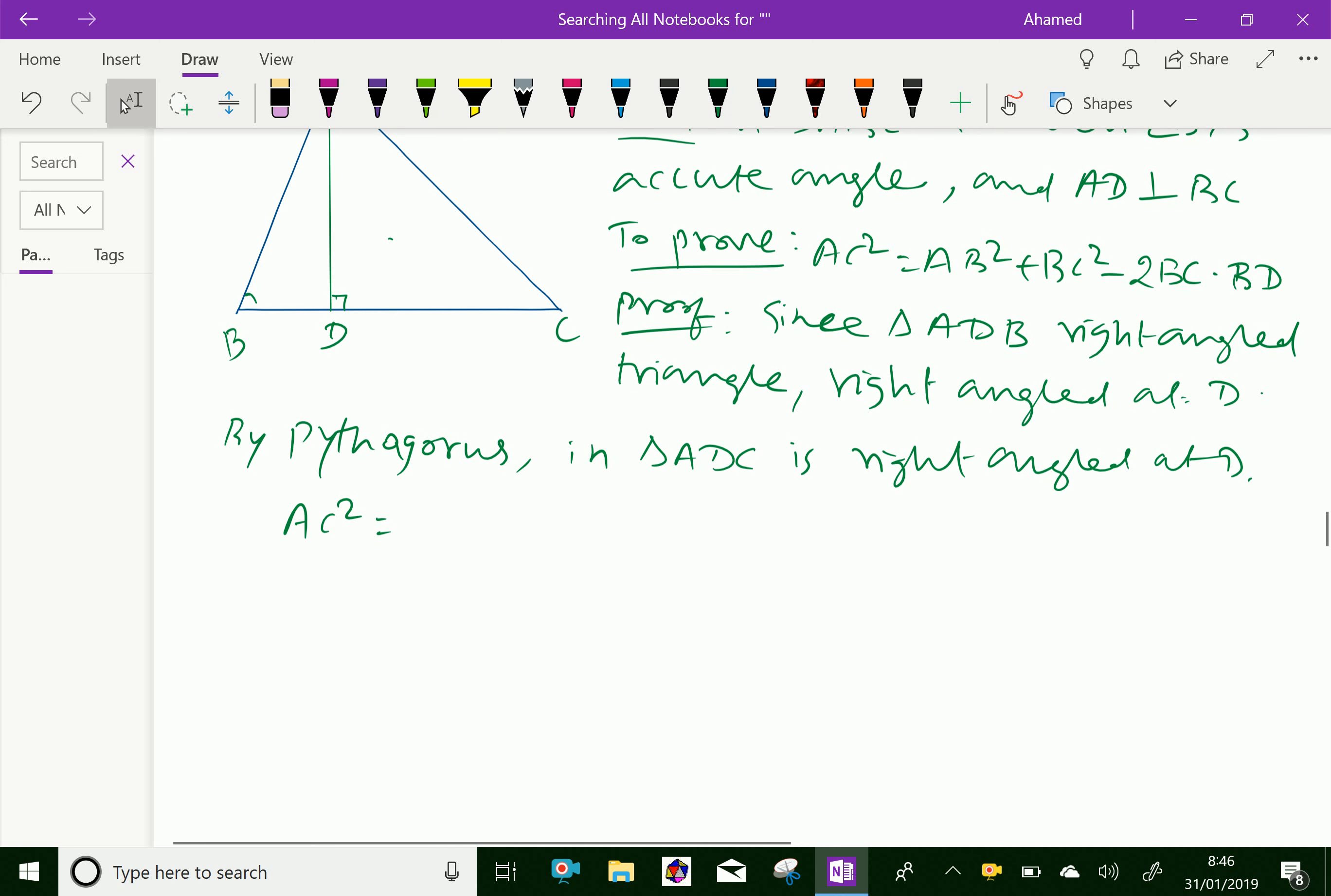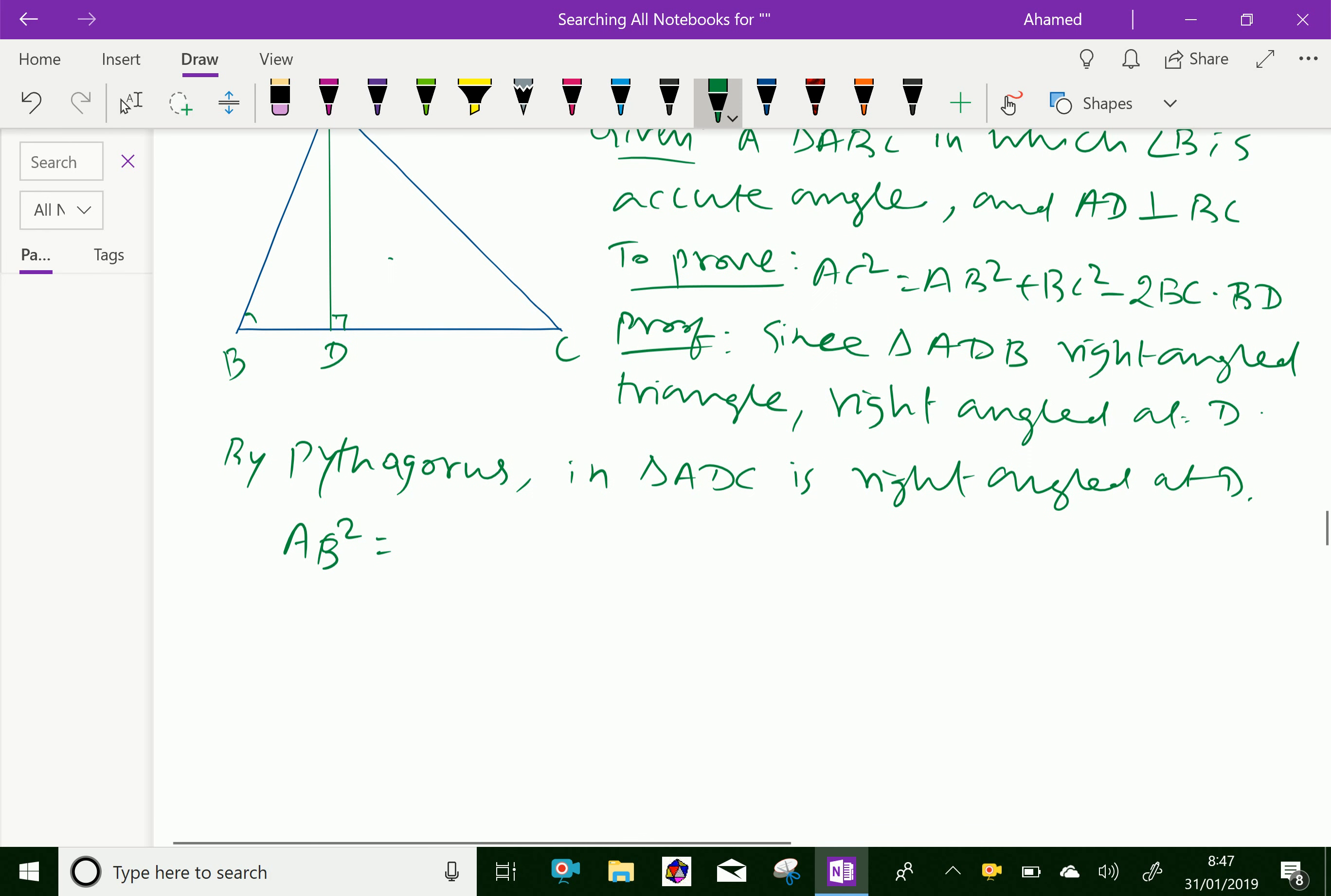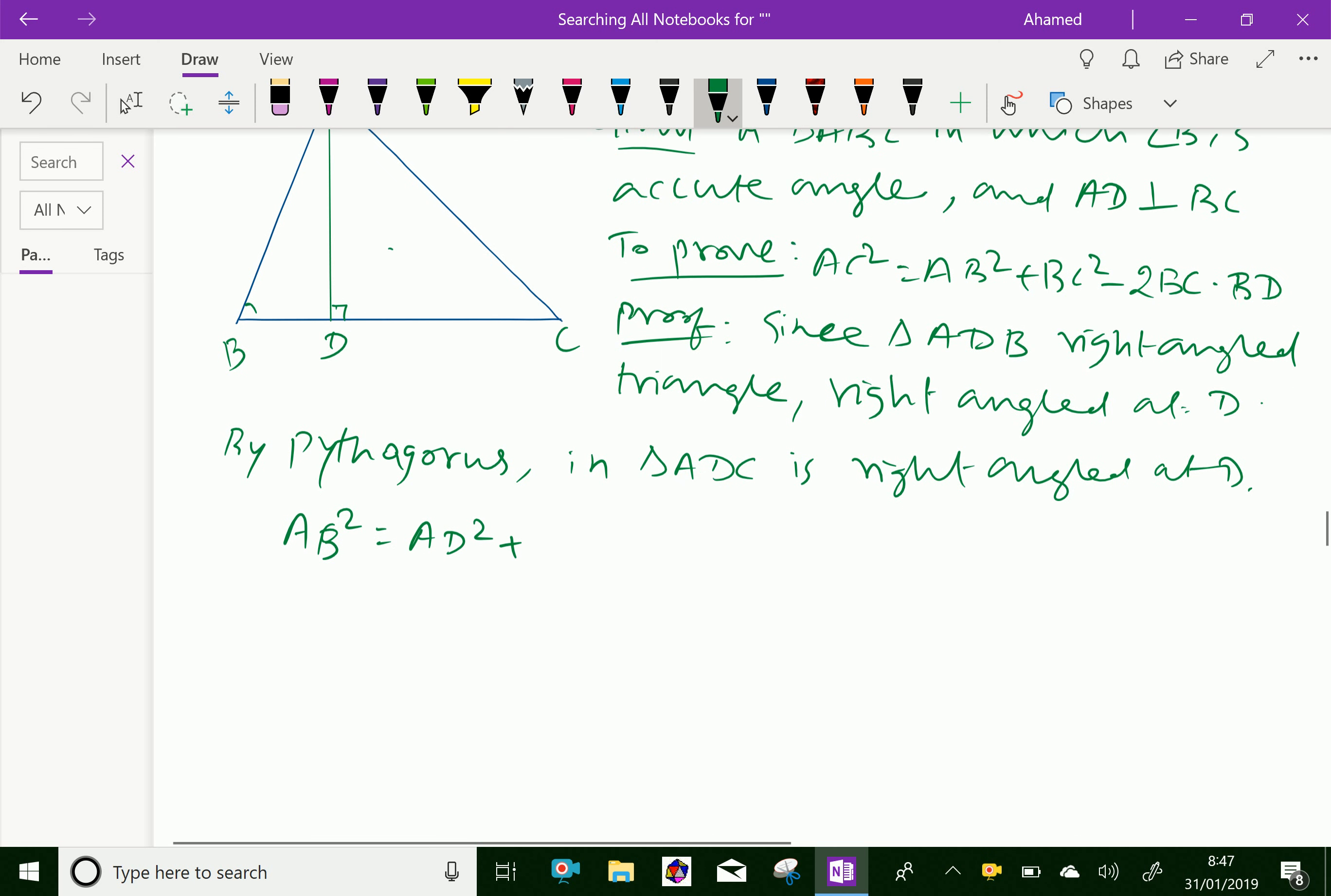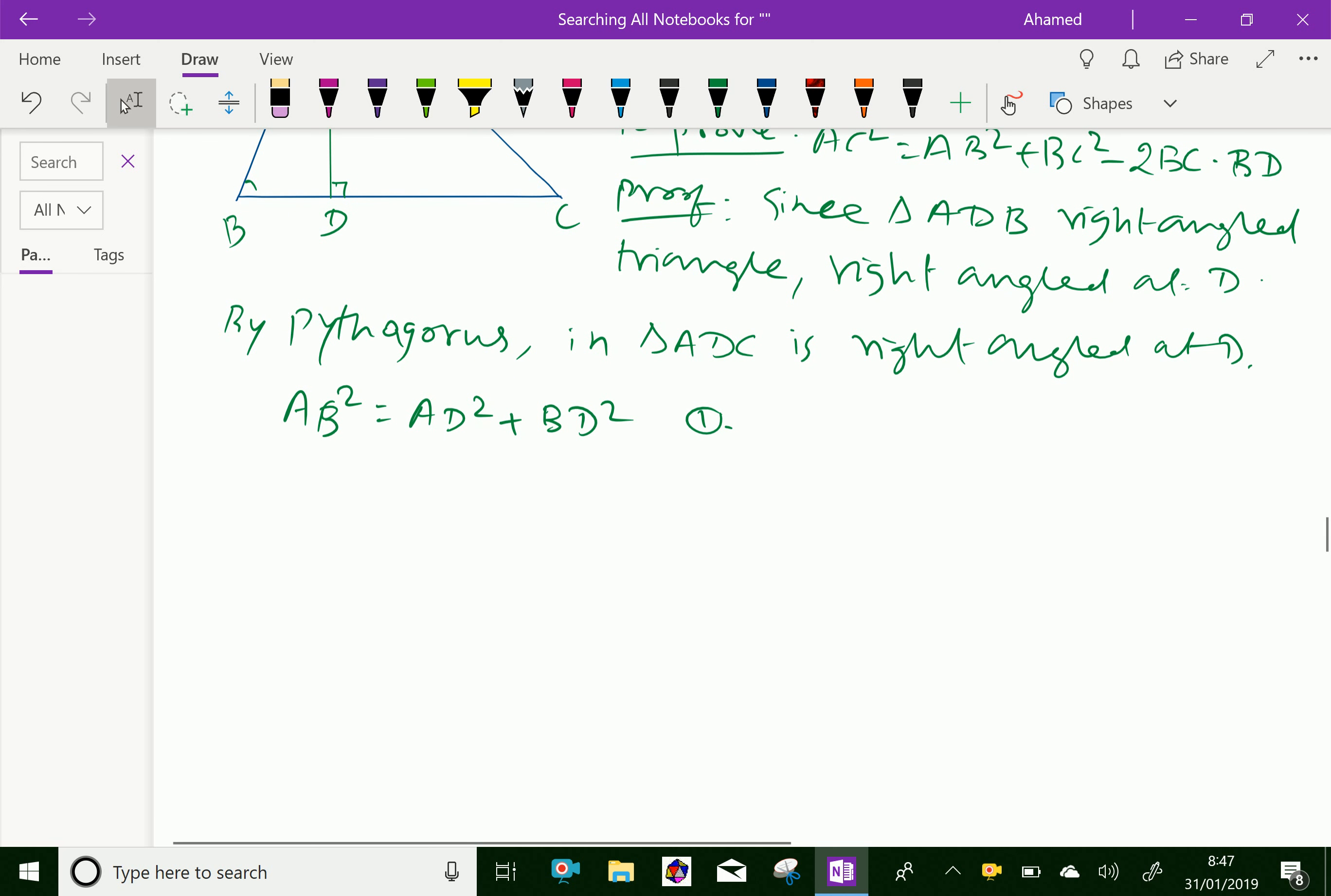Here two triangles are right-angled triangles: ABD and ADC. Therefore, you can write AB² = AD² + BD² (equation 1) and AC² = AD² + DC² (equation 2). Therefore, AC² = AD² + (BC - BD)².